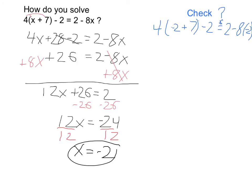Now to check this, I'm going to plug the negative 2 into my original equation, which I've done over here, and I want to see if this is equal on each side. So let's take a look. Negative 2 plus 7 is 5, so this becomes 4 times 5 minus 2, which is 20 minus 2, or 18.